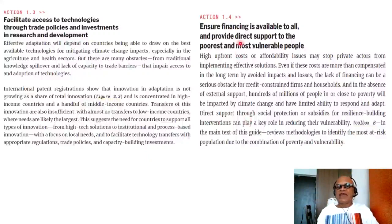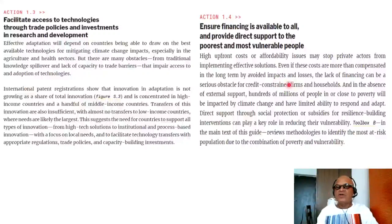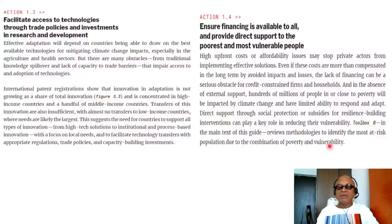Action 1.4: ensure financing is available to all and provide direct support to the poorest and most vulnerable people. High upfront costs or affordability issues may stop private actors from implementing effective solutions, even if these costs are more than compensated in the long term by avoided impacts and losses. The lack of financing can be a serious obstacle for credit-constrained firms and households. In the absence of external support, hundreds of millions of people in or close to poverty will be impacted by climate change and have limited ability to respond and adapt. Direct support through social protection or subsidies for resilience-building interventions can play a key role in reducing their vulnerability.